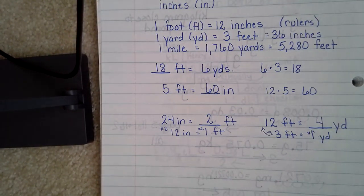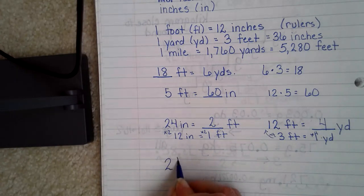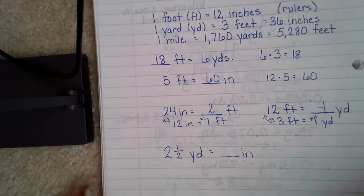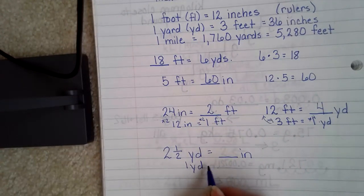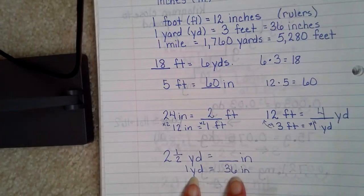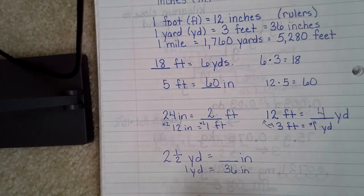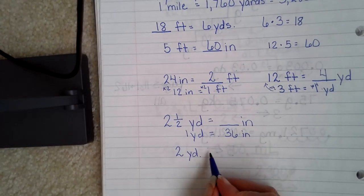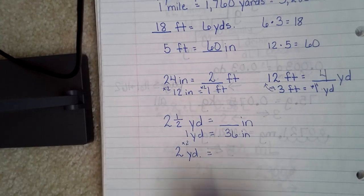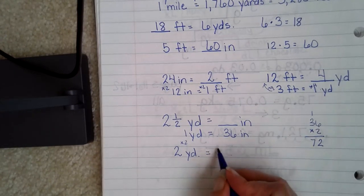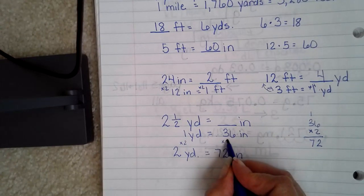Let's do an interesting one: 2 and a half yards equals how many inches? Looking up, 1 yard equals 36 inches. I'll break it apart — first, 2 yards: since 1 yard is 36, I multiply 36 times 2. Over to the side, 36 times 2 equals 72 inches. So 2 yards equals 72 inches, but I still need to handle the half yard.